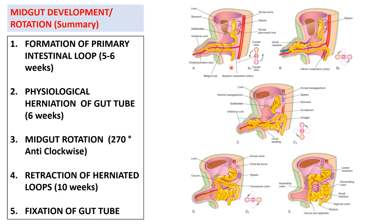Let's summarize the process of midgut rotation or midgut development. The first step was the formation of the primary intestinal loop from the fifth week onwards, into cranial and caudal limbs. The second step was the elongation of the cranial limb of the primary intestinal loop, leading to the formation of physiological hernia because of the expansion of the liver. This was a physiological herniation of the gut tube which appeared at the sixth week of development.